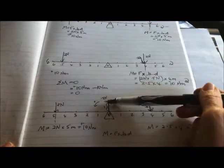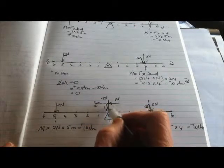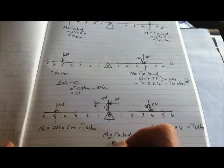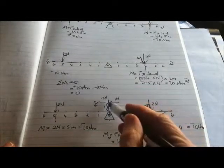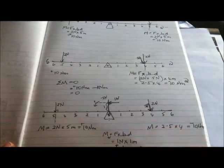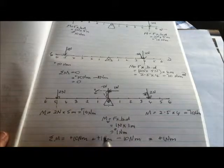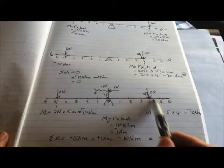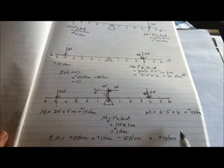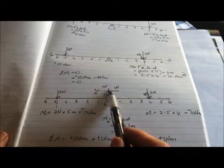The moment due to the one Newton force is that force times the perpendicular distance back to the fulcrum, which is one meter — so that's one Newton meter in the positive direction. The overall moment for the whole system is: positive 10 Newton meters from the left side, plus one Newton meter from the pushing force, minus 10 Newton meters from the right side — giving a total of plus one Newton meter. Intuitively this makes sense because the two and 0.5 Newton people balanced the two Newton person, leaving just the one Newton push unbalanced.